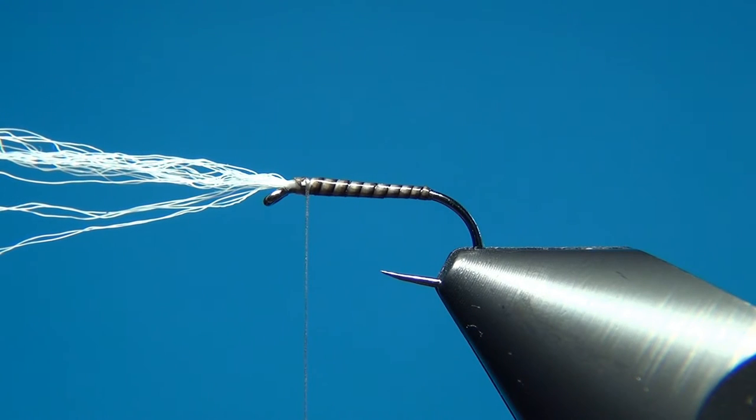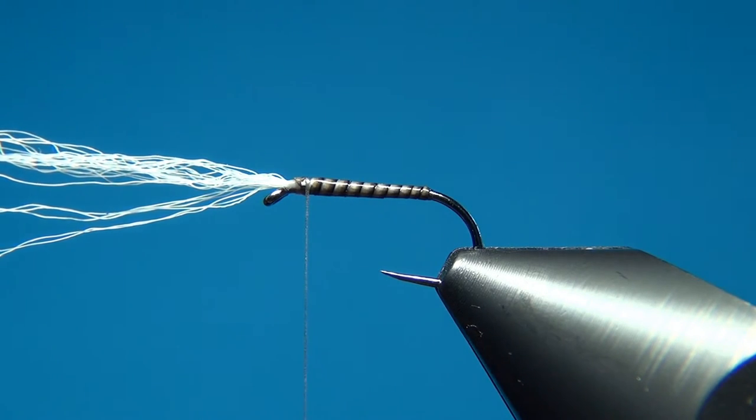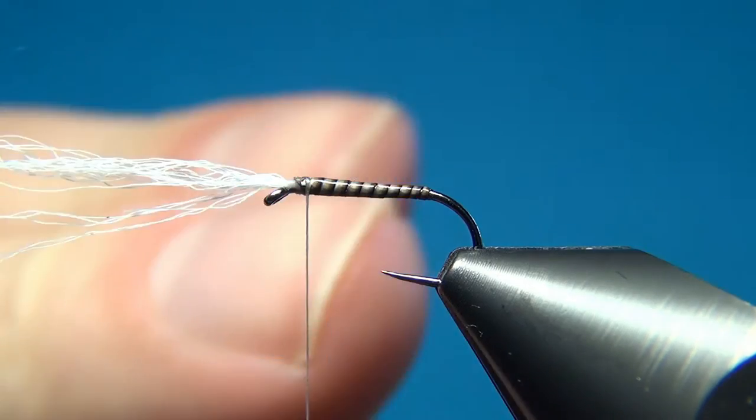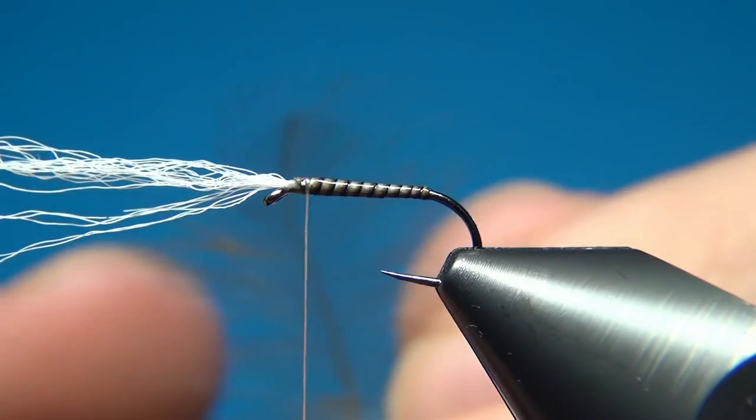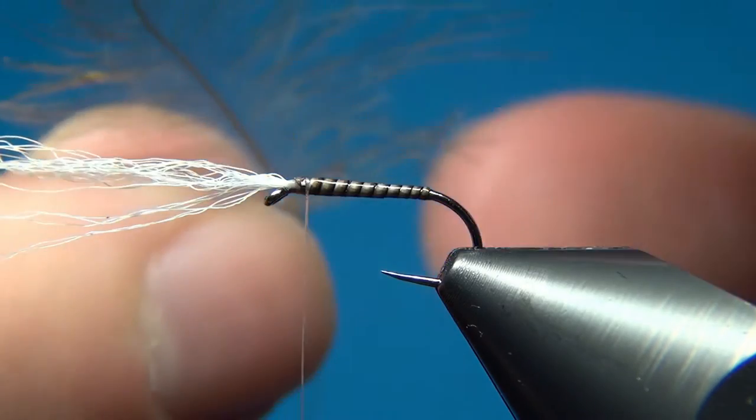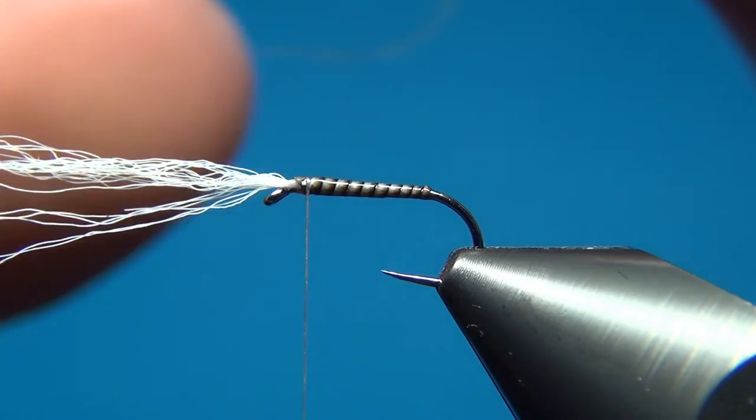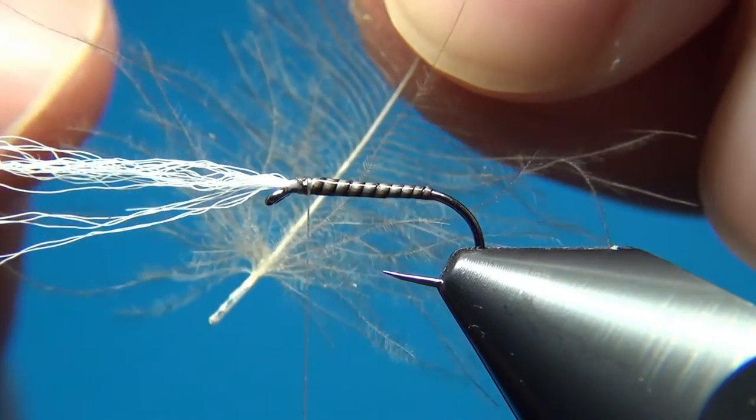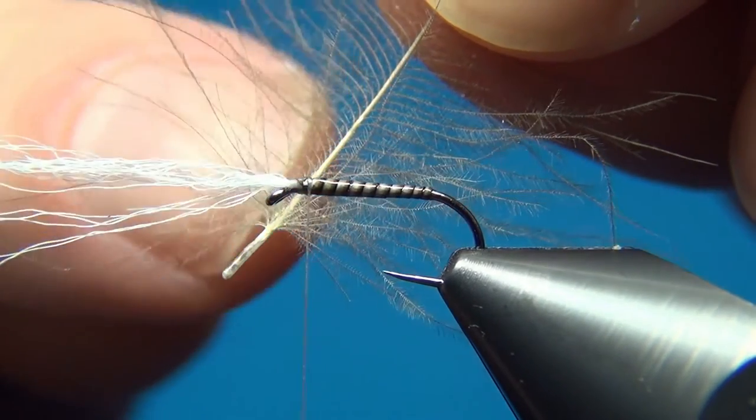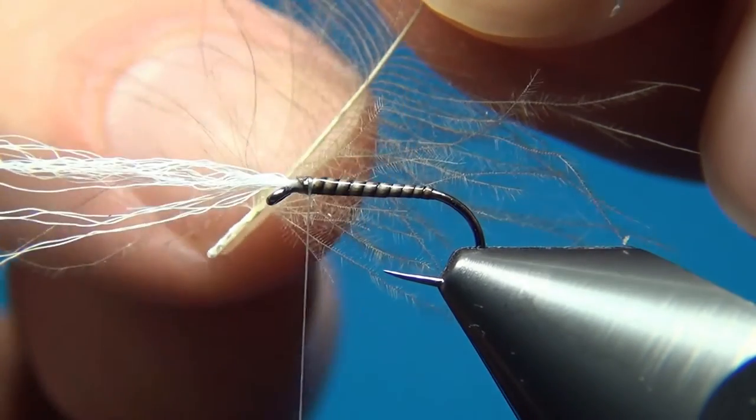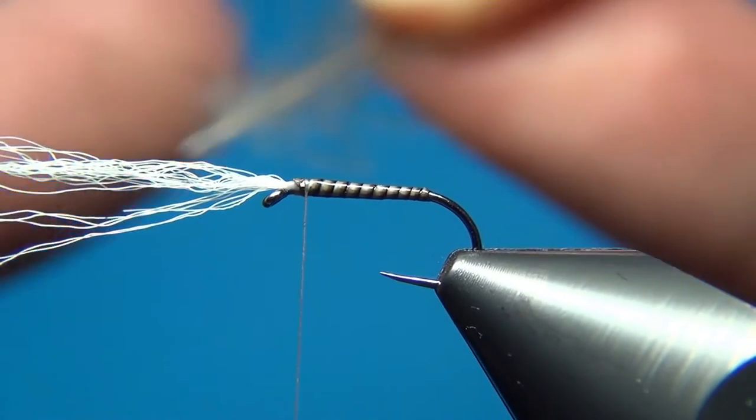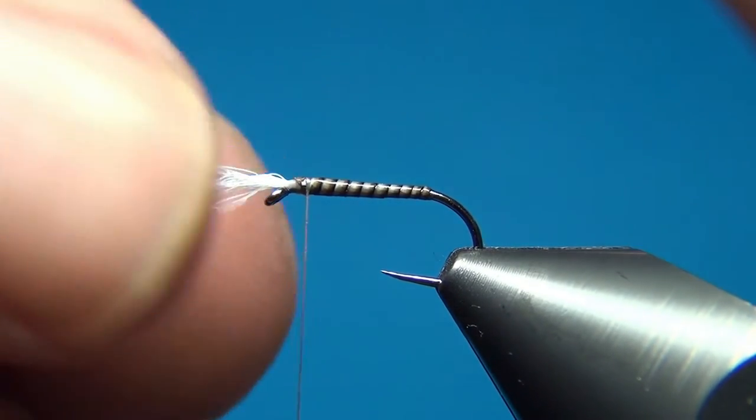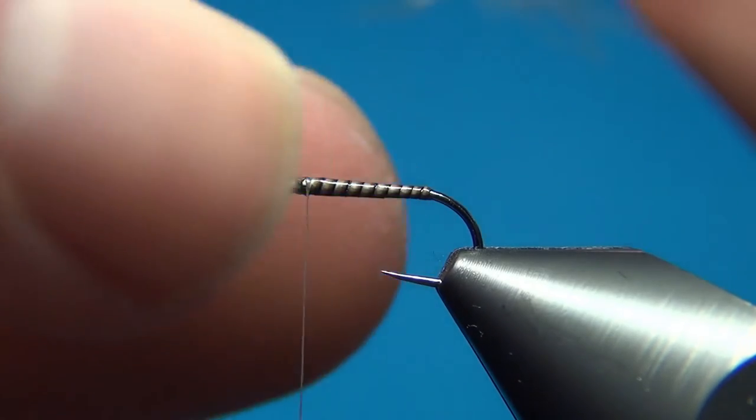These are the two last things that we'll tie on this fly. In order to do the thorax, we'll use one CDC feather. You want to choose one in a slightly darker color than the body and also with these full fibers here. They have a lot of small bristles on it. This will catch the air and really help this fly float.